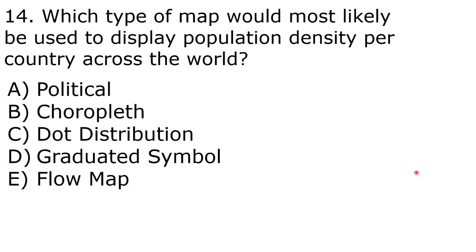Which type of map would most likely display population density per country across the world? The correct answer is B, choropleth. The last map we saw was a choropleth map comparing data per country. We're looking at a thematic map, which rules out option A (reference map). We don't want to count symbols to determine population, so that rules out options C and D. A flow map wouldn't make sense here. A choropleth map is best for organization and clarity.